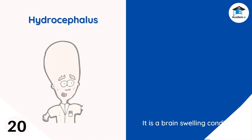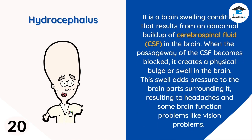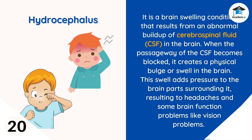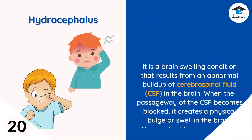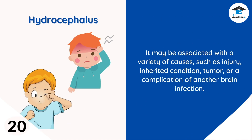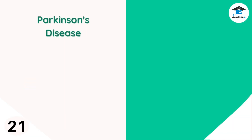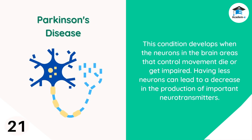Hydrocephalus is a brain swelling condition that results from an abnormal buildup of cerebrospinal fluid or CSF in the brain. When the passageway of the CSF becomes blocked, it creates a physical bulge or swell in the brain. This swelling adds pressure to surrounding brain parts, resulting in headaches and brain function problems like vision problems. The cause of hydrocephalus is not yet confirmed but may be associated with injury, inherited conditions, tumors, or complications of another brain infection.